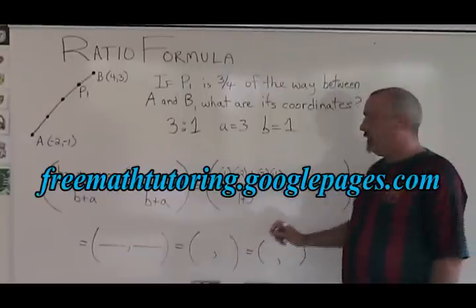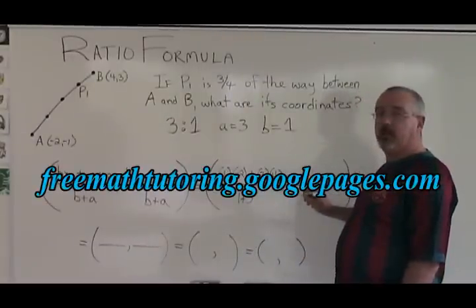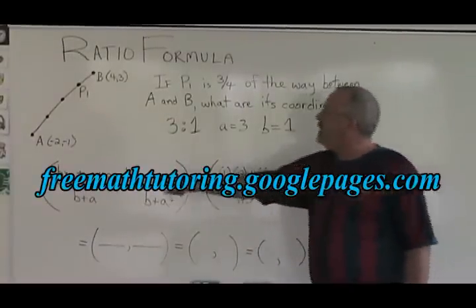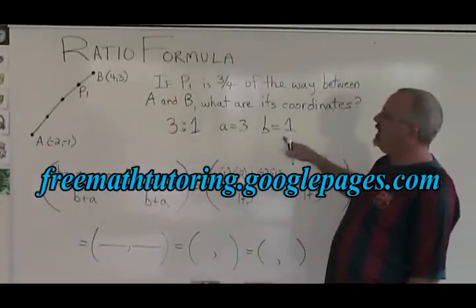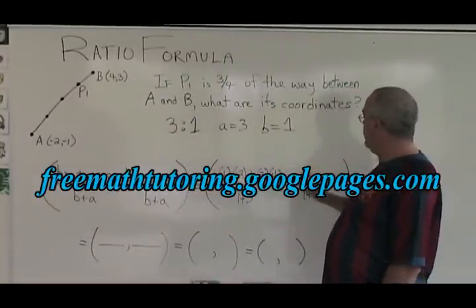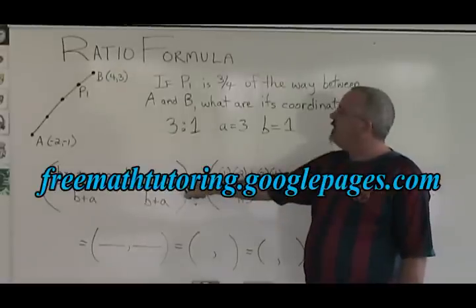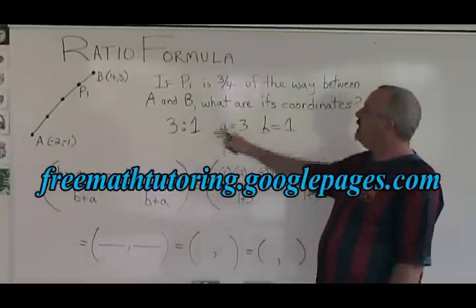The y coordinate formula also has B plus A in the denominator, so we have 1 plus 3 again. BY1 becomes 1 times -1, plus AY2 becomes 3 times 3.